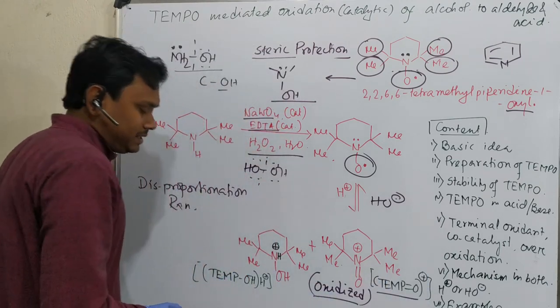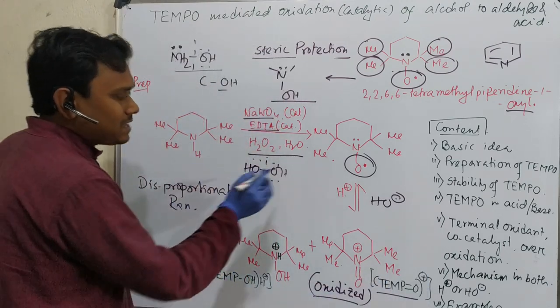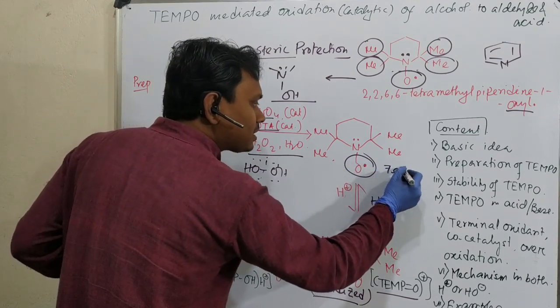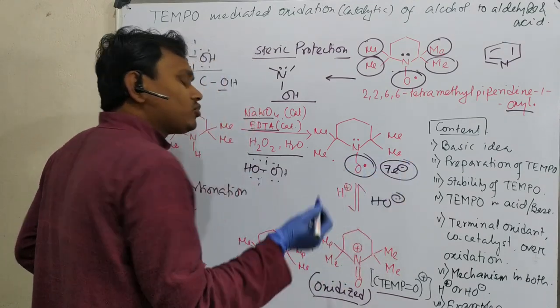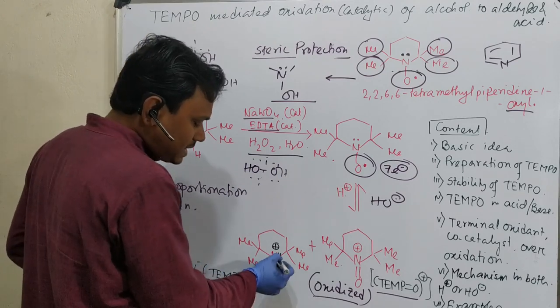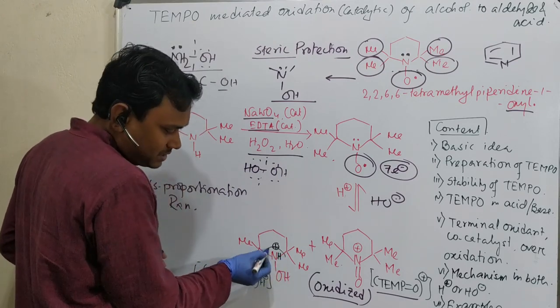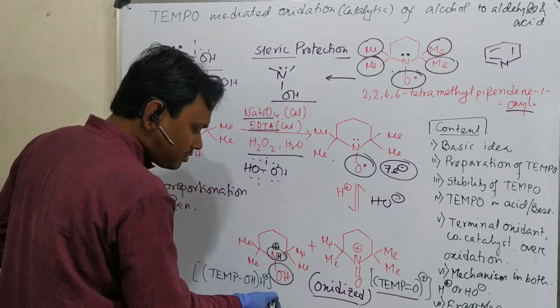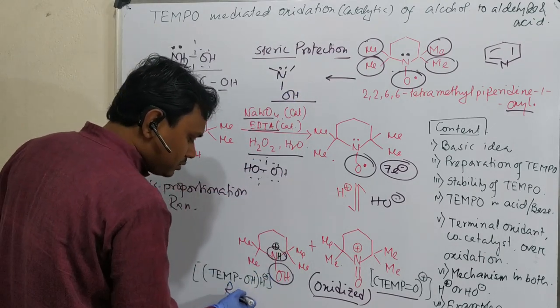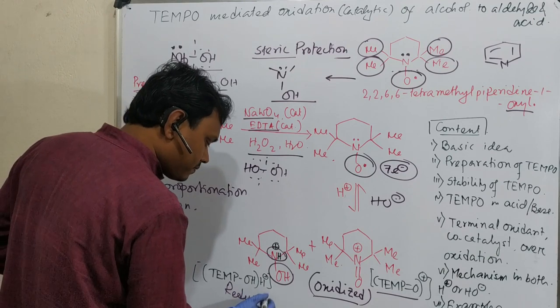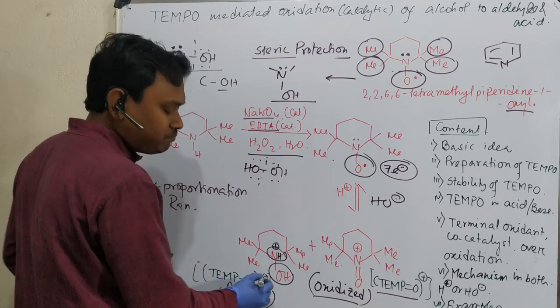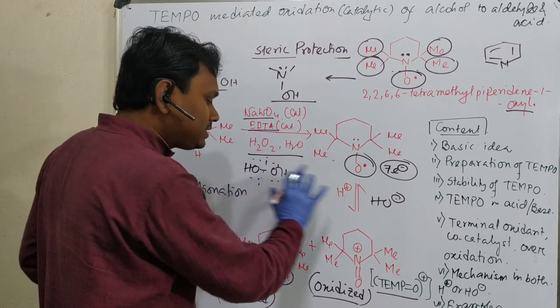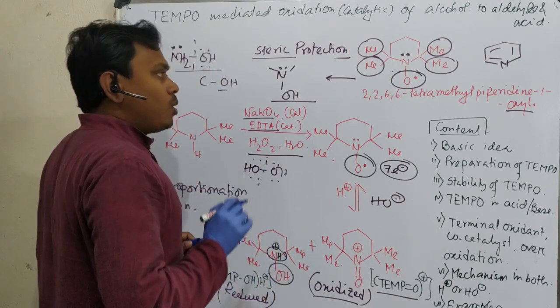And another is that is a reduction. This is a radical, means it is a 7-electron species. It wants electron, so it takes electron. This is the hydroxylamine negative form. This is the reduced form and is named as TEMPO-H plus. So this is the overall reaction.